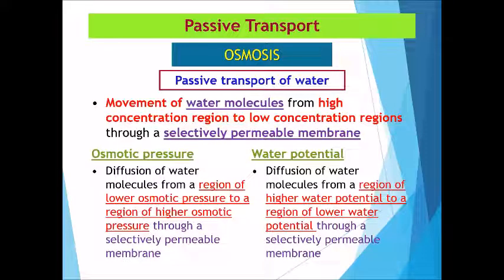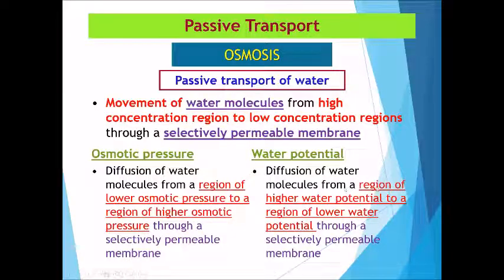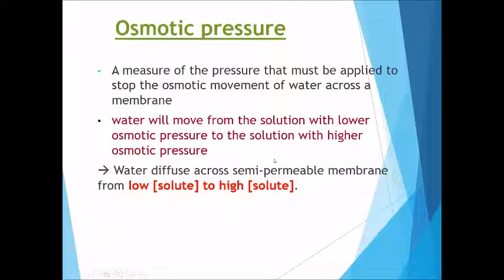There are two important factors related to osmosis. The first is osmotic pressure — the diffusion of water molecules from regions of lower osmotic pressure to regions of higher osmotic pressure through a selectively permeable membrane. The second is water potential — the diffusion of water molecules from regions of higher water potential to regions of lower water potential through a selectively permeable membrane.